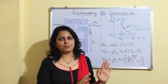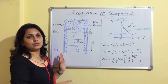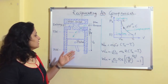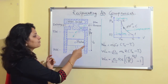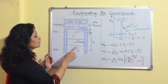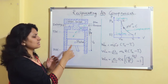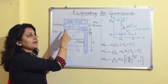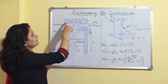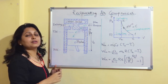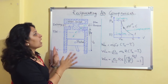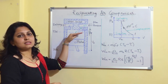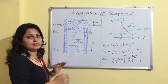Now let us see the construction and working of a reciprocating compressor. In this diagram, you can see it is basically a piston and cylinder arrangement. The main components are: piston, piston rings, connecting rod, crankshaft, camshaft, cylinders, inlet valve, outlet valve, and water jackets. Water jackets are provided for cooling purposes. As the piston starts moving from top dead center to bottom dead center, the leftover air in the cylinder starts expanding.